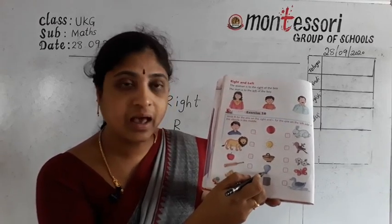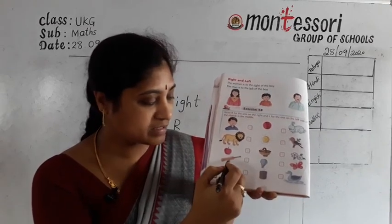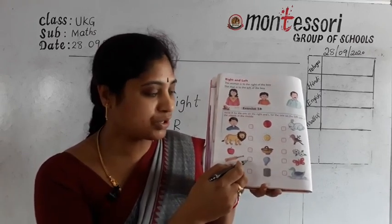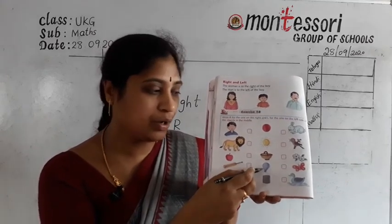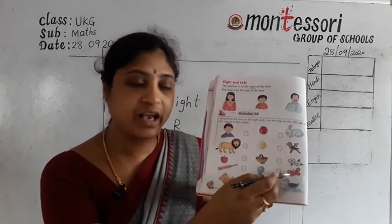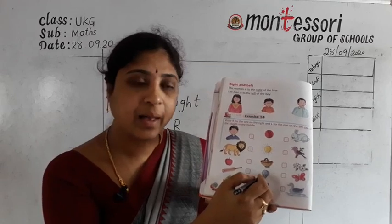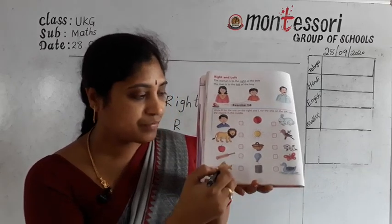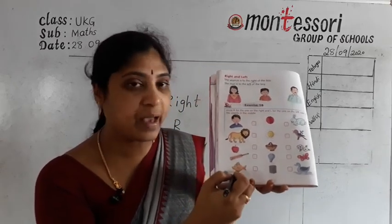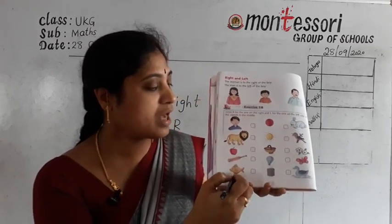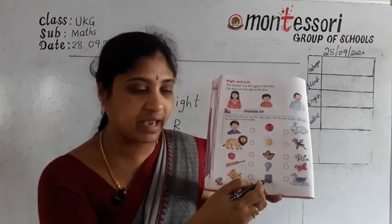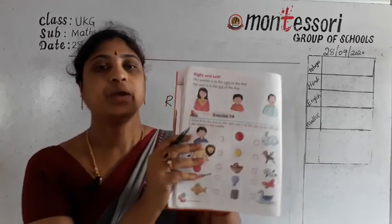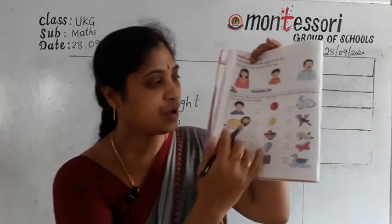Next one, here is a balloon with a bat and a butterfly. The bat is to the right of the balloon. The butterfly is to the left of the balloon. Next, in this box there is a fish and a duck. The fish is to the right of the basket. The duck is to the left of the basket.